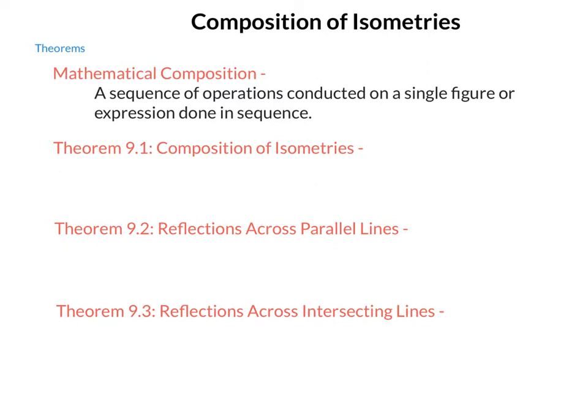In order to govern these concepts of mathematical composition, we do have three overall theorems that we're going to be taking a look at. First, theorem 9.1, composition of isometries, simply states that the composition of two or more isometries is an isometry. So if I do a reflection, that's an isometry. If I do a rotation, that's an isometry. So if I take an object to reflect it and then rotate it, that resulting figure will also be an isometry.